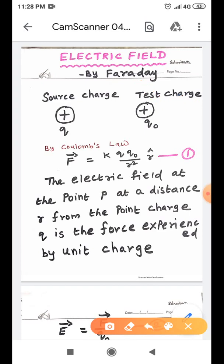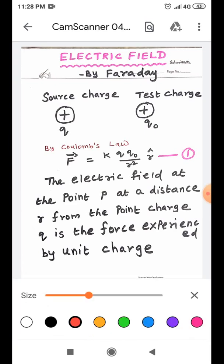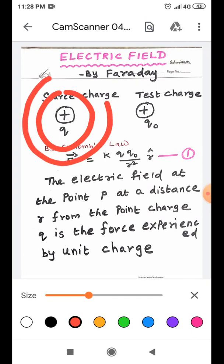The reason is, around the source charge, there is a field, that field is called the electric field. In the source charge, there is electric field.